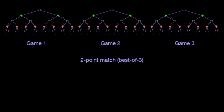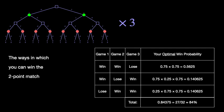Going back to CoinGammon, the ways in which you can win a two-point match is given in the table. You can win the first two games in a row, which has the probability 0.75 squared. Or you can win the first game, lose the second game, and win the last game.